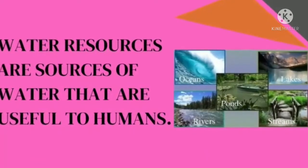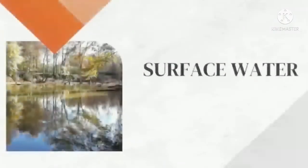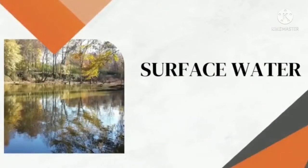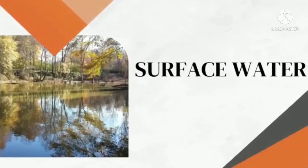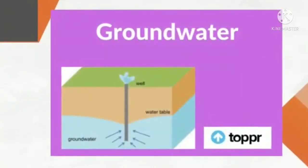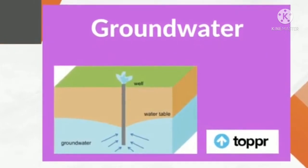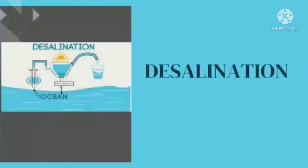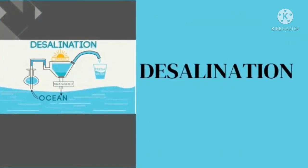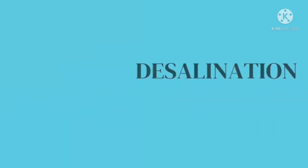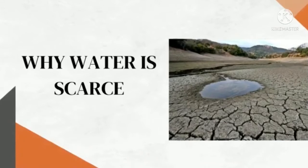First of all, we'll look at water resources — the sources of water that are useful to human beings. We have surface water, which is the water that collects in ponds, rivers, lakes, or freshwater wetlands. Surface water is naturally replenished by rain. Then you have groundwater, which is located in the soil or in the pores of crevices and rocks. Desalination is a process by which salt water is converted to fresh water.